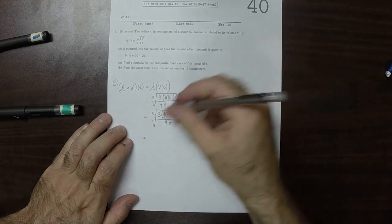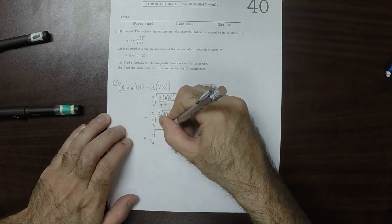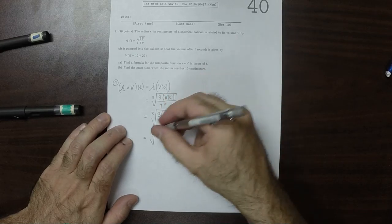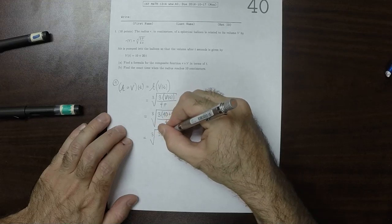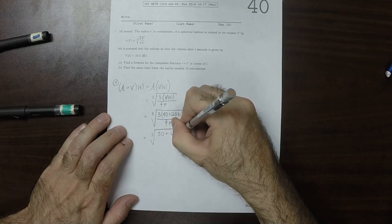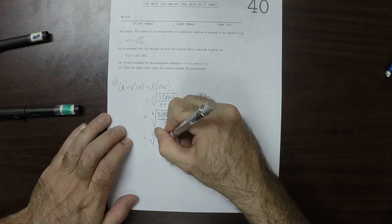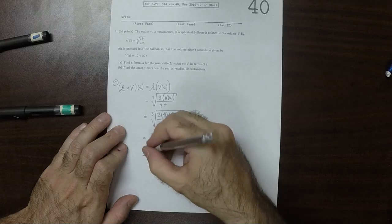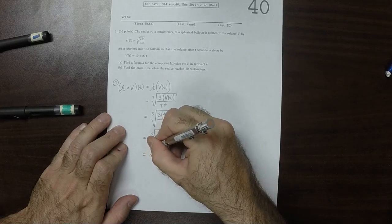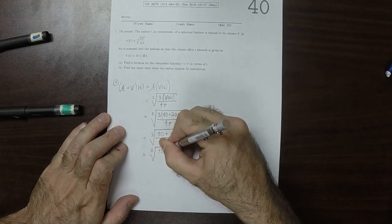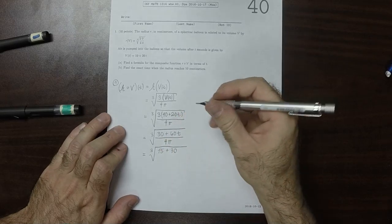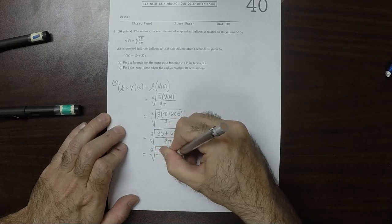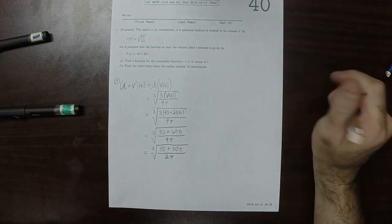And then we can simplify just a little bit by getting 30 plus 60T over 4 pi. And then maybe I'll cancel out a common 2. That would be 15 plus 30T over 2 pi. So that's the answer to part A.